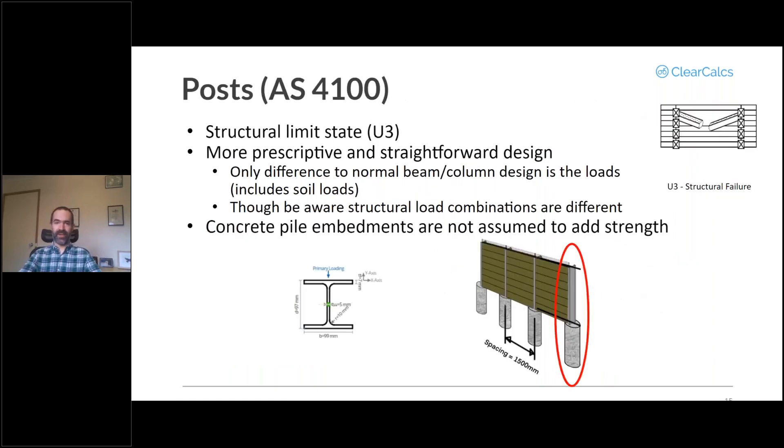So that takes care of our geotechnical limit states. We would then move on to the structural limit states. These are a bit more straightforward. Many of you will be used to going through the structural standards already. This is just going through AS 4100. The only real difference between a post in a sleeper retaining wall and a normal beam column design is that your loads are going to include soil loads, making use of a load combination that you may not commonly be using in your structural calculations.